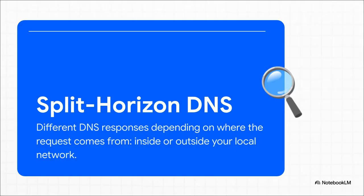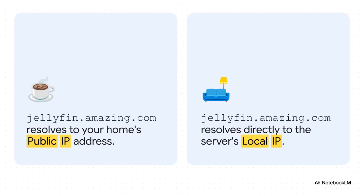Here's the magic trick. Think of your DNS server like it has two different address books for the exact same name. It's smart enough to know where you're asking from — are you inside the house or out in the wider world? And based on that location, it just hands you a different address. This slide lays it out perfectly: when you're at a coffee shop and you type in jellyfin.yourdomain.com, your DNS points you to your home's public IP address. But when you're sitting on your couch connected to your home Wi-Fi, that exact same domain name points you straight to the local IP of your server, like 192.168.1.50. It's one name, but two totally different optimized paths.